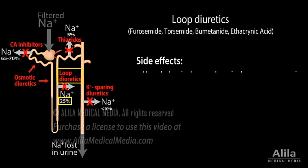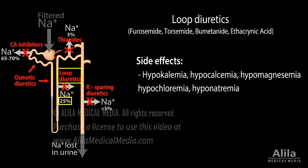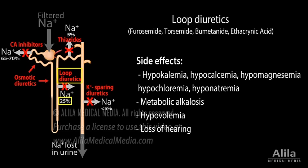Side effects of loop diuretics include electrolyte imbalances, metabolic alkalosis, hypovolemia due to excessive loss of water, loss of hearing due to inhibition of a similar transporter in the inner ear, and gout due to interference with transporters involved in urate secretion.